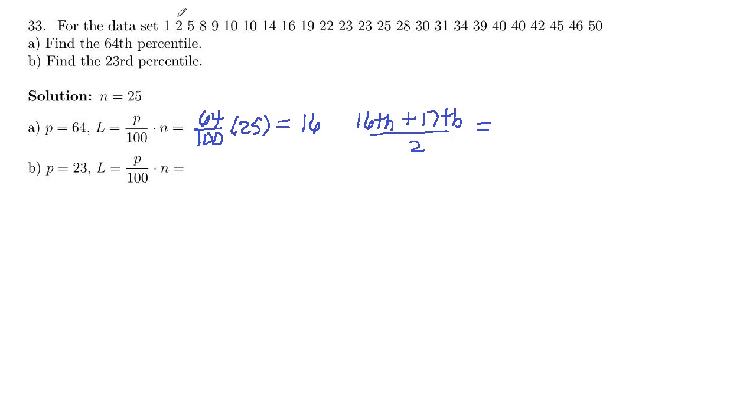So let's see here, 2, 4, 6, 8, 10, 12, 14, 16th is 30, 17th is 31. So we're going to do 30 plus 31, and divide by 2, which is going to be 30.5.